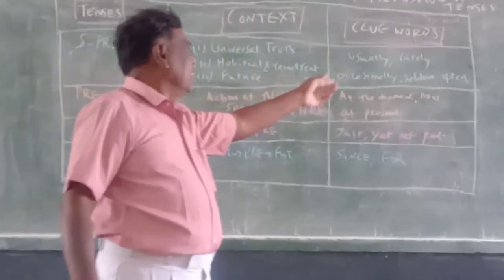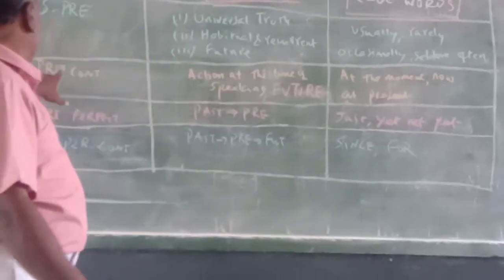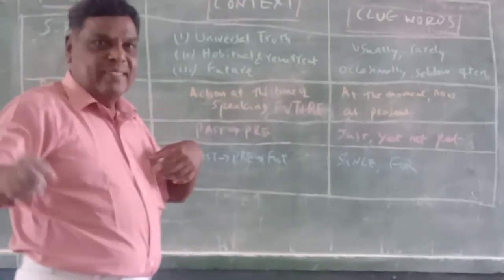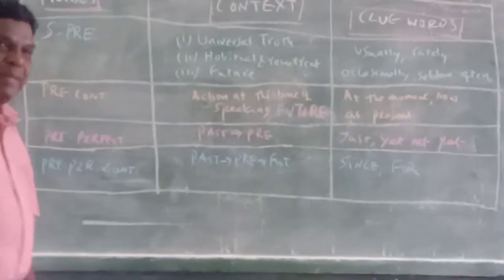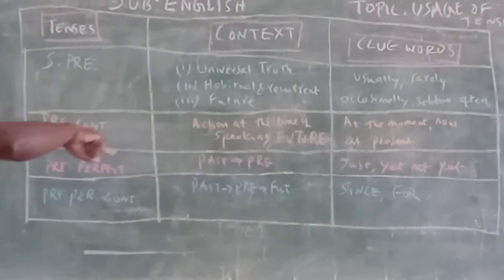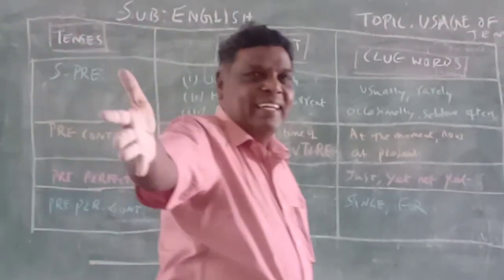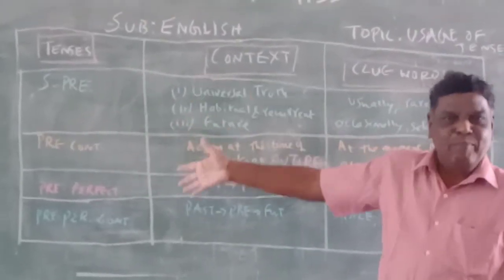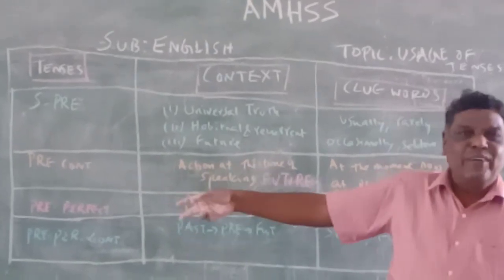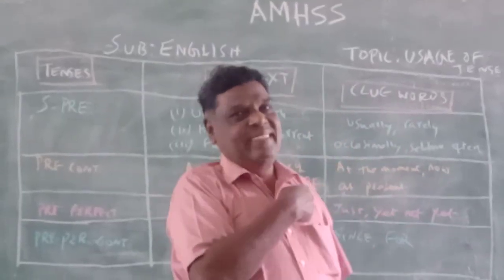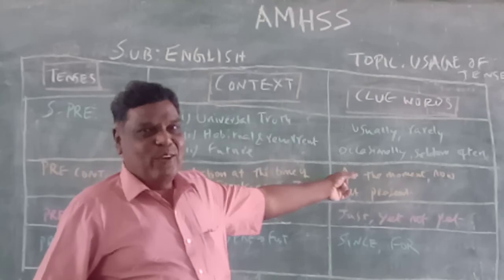Signal words for present: usually, normally, occasionally, seldom, often. Present continuous: at the moment, now, at present. Present perfect: past into present — just, yet, already. Present perfect continuous: past into present into future — since, for. That is the usage of all four present tenses: simple present, present continuous, present perfect, and present perfect continuous. We shall see the next topic next time.